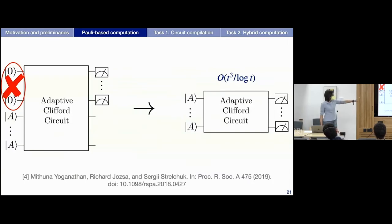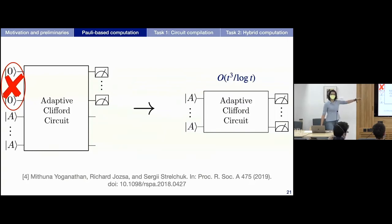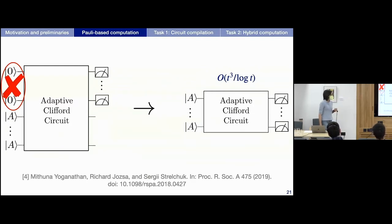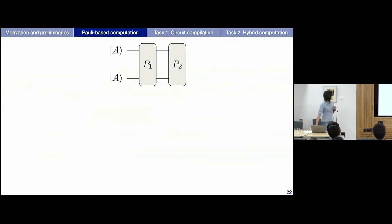They explain this in light of the PBC reduction and mention it can be done with O(T³) operations. The first thing we did in our work was find a different — and arguably more intuitive — way to open these black boxes and understand how to perform these Pauli measurements.